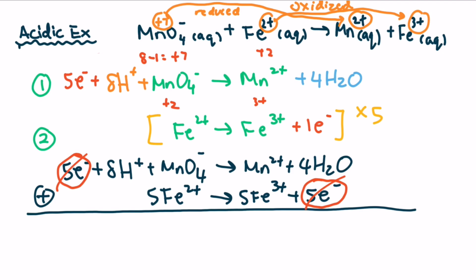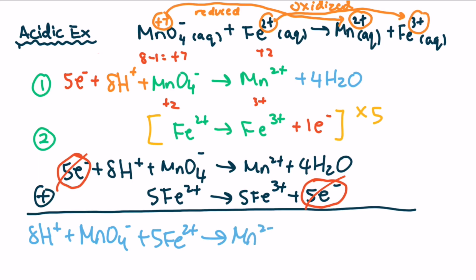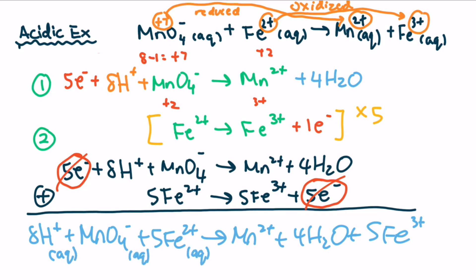Now let's add them together. We have 8H+ plus MnO4⁻ as our first equation finalized. Our second equation is going to have 5Fe2+ on the left and 5Fe3+ on the right with five electrons. When we add them, the five electrons on the left of equation one and the five electrons on the right of equation two cancel out. The final answer has 8H+ plus MnO4⁻ plus 5Fe2+ on the left going to Mn2+ plus 4H2O plus 5Fe3+ on the right. Make sure you add the states — aqueous for the ions, liquid for water. And that is our final answer for the acidic example.